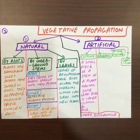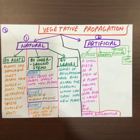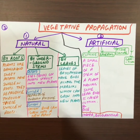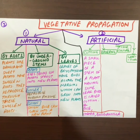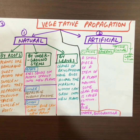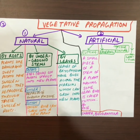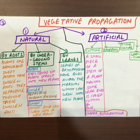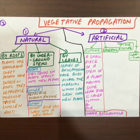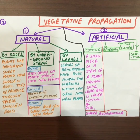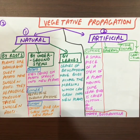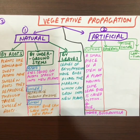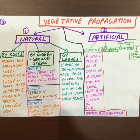Now let us learn about vegetative propagation in detail. There are two types: natural and artificial. Under natural vegetative propagation, by roots — plants like dahlia and sweet potato have swollen roots and reproduce through these swollen roots.